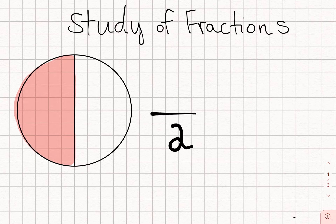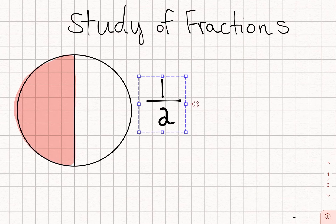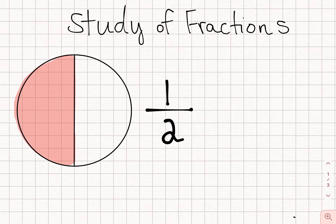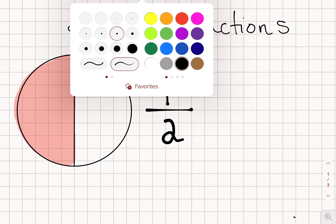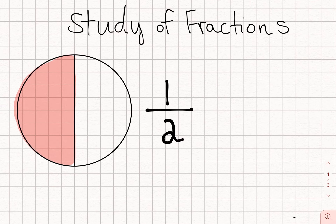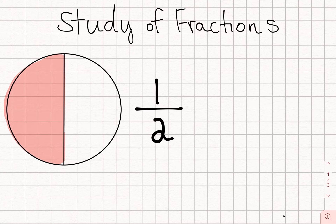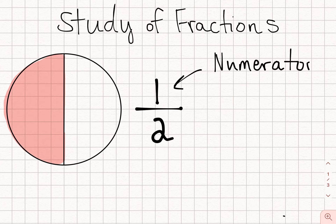So I'm going to record that on top: one piece — that's how many pieces I have. We have a special name for these two parts of a fraction. This top number we call the numerator. It tells us the number of pieces we have. Go ahead and record this in your math notebooks: the numerator is how many pieces you have.